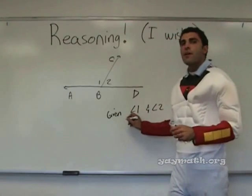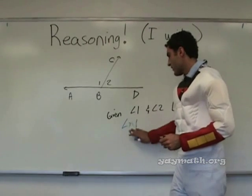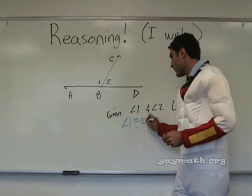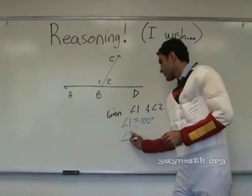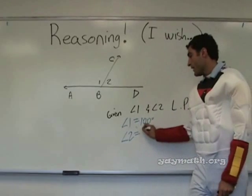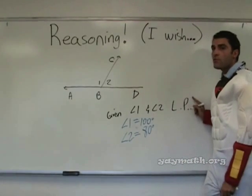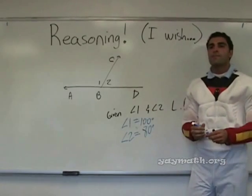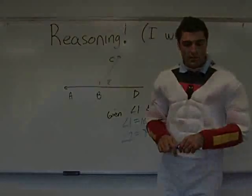Now you're thinking. Let me start you off. Angle one equals 100 degrees. Angle two equals — what do you think? 80. So given the information, it's still true. The conjecture is false — they're not the same. So this conjecture is false.